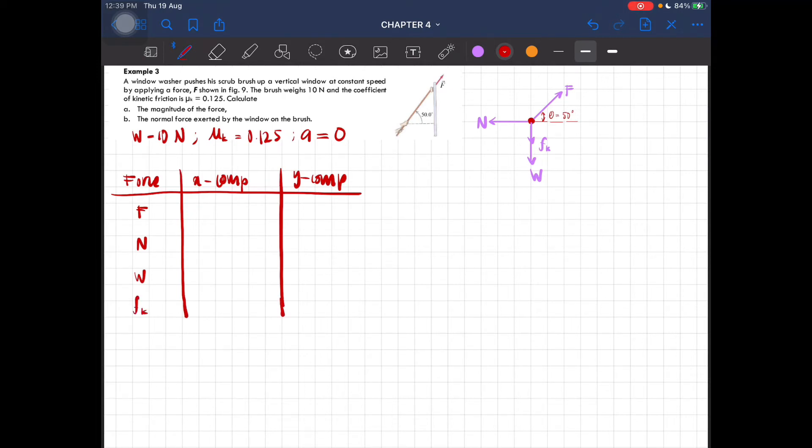Okay, so the forces are F, N, W, and Fk. So F resolved there: F cos 50 degrees x component, y component there is F sin 50 degrees. And then we have N in the x component, that would be negative N, and then y there's zero. W, there's the y component, so negative mg, it's pointing downwards. Fk is the same, negative Fk.